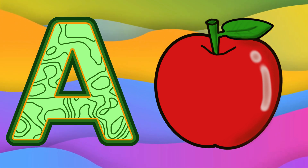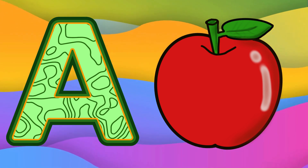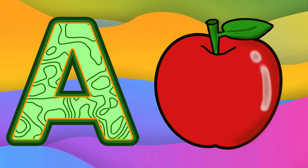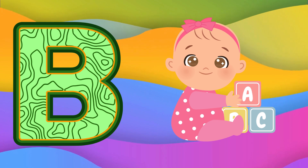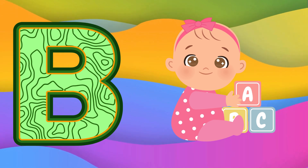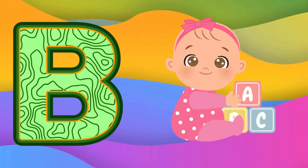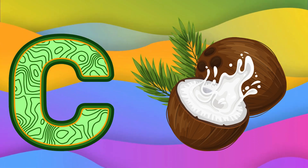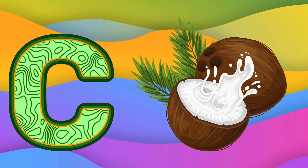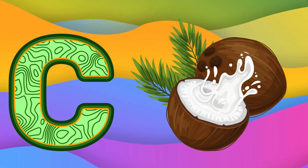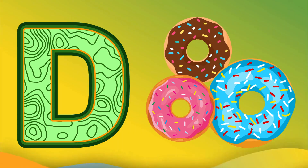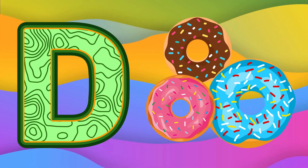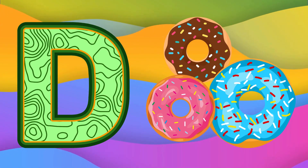A is for Apple. A, A. Apple. B is for Baby. Ba, Ba. Baby. C is for Coconut. Ka, Ka. Coconut.